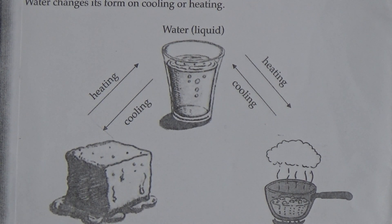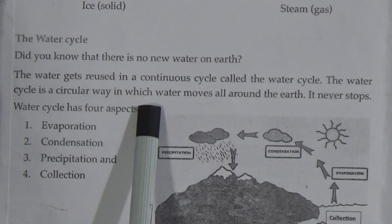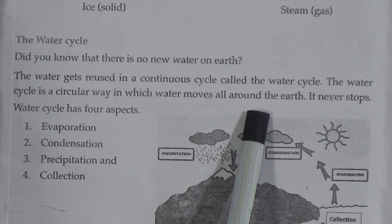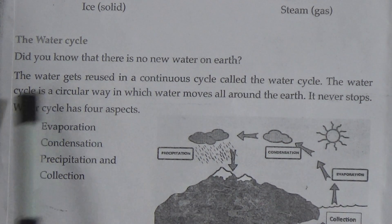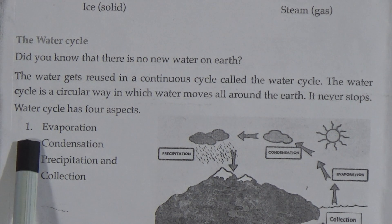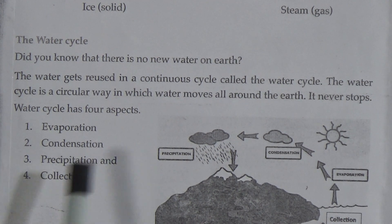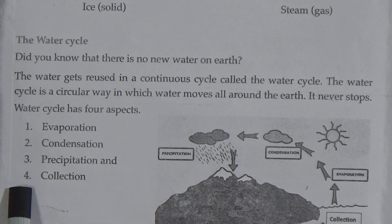The water cycle. Did you know that there is no new water on earth? The water gets reused in a continuous cycle called the water cycle. The water cycle is a circular way in which water moves all around the earth. It never stops. The water cycle has four aspects: number one, evaporation; number two, condensation; number three, precipitation; and number four, collection.